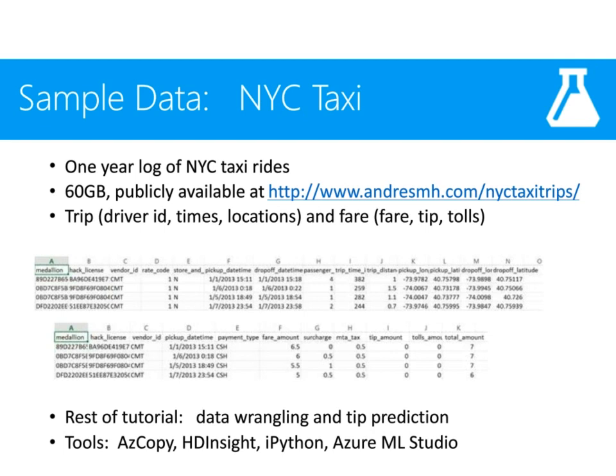The sample data — the NYC Taxi data set — is a publicly available data set which has about a year's worth of NYC Taxi rides for the year 2013. There were about 173 million rides in all. The data is about 60 gigs unzipped and publicly available. It consists of two sets of data: the trip data, which consists of the driver ID, pickup times, and pickup and drop-off lat/lon; and the fare data, which consists of the fare amount, the tip amount, tolls, and surcharge.